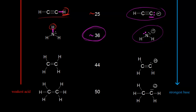So what's the pKa for this proton? It's approximately 44. The electrons in magenta come off onto the carbon, and this would be your conjugate base. Our last example, ethane, is the weakest acid out of all the acids listed on this pKa table. The pKa for this proton is approximately 50, and the electrons in magenta here would be left behind on this carbon.